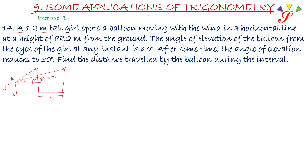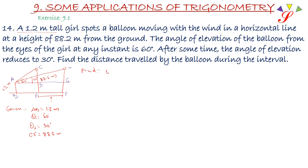Let's name the points A, B, C, D, E, F, G and H. Given: height of the girl AB = 1.2 meter, theta 1 = 60 degree, theta 2 = 30 degree, and the height of the balloon CE = 88.2 meter. Find the distance travelled, that is EF.